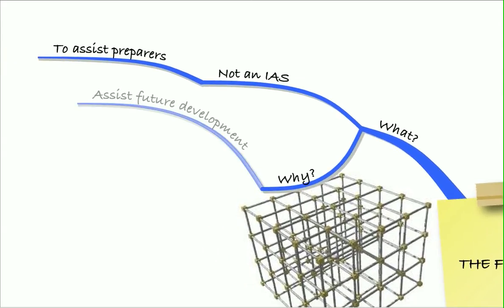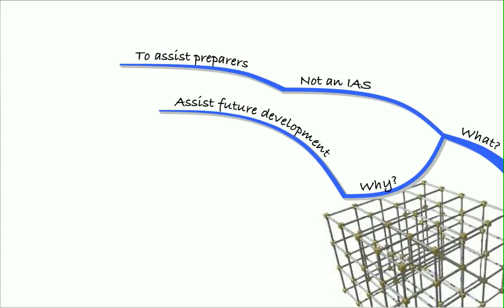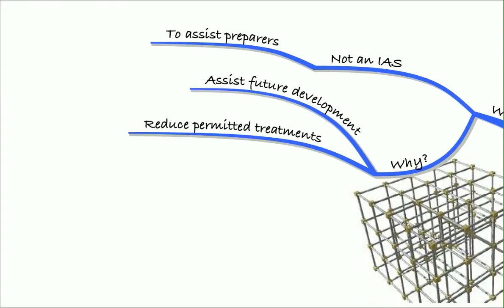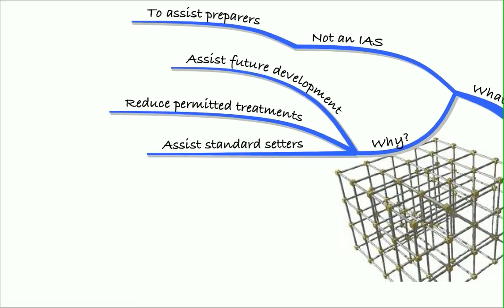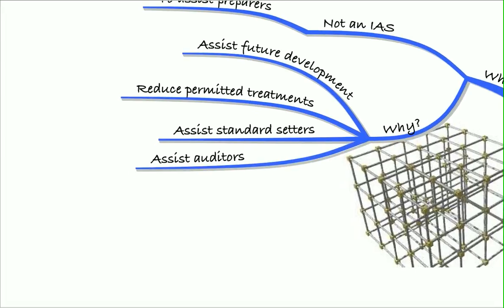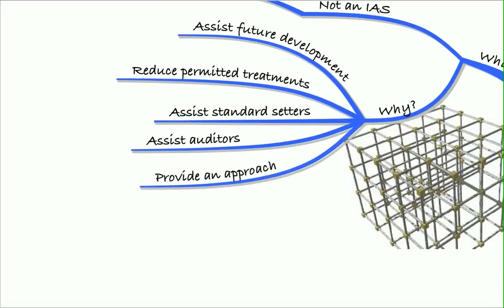Why do they need to do that? Well, the framework assists future development, so it gives us definitions to do that. It reduces permitted treatments because it gives us principles on which to base treatments. It therefore assists the standard setters when they're making new standards. They can go back to the definitions of an asset and a liability, for example. It'll assist auditors to decide whether treatments are permitted or not, and it provides an approach for our financial statements.